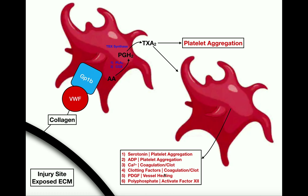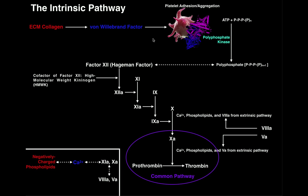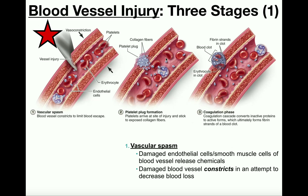Leading into the next video on coagulation cascades, platelets also secrete polyphosphate — a polymer of phosphate molecules that serves to activate clotting factors. Specifically, the polyphosphate released by platelets activates factor 12, or Hagemann factor, which initiates the intrinsic pathway of coagulation. After forming the platelet plug to seal off the injury site, coagulation further ensures no blood escapes by forming a clot. There are two branches of coagulation: the intrinsic pathway and the extrinsic pathway, which will be covered in the next video.